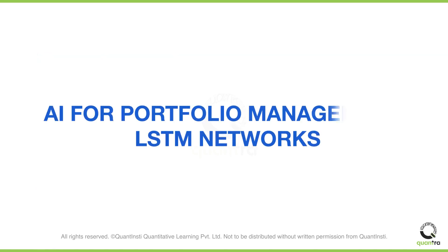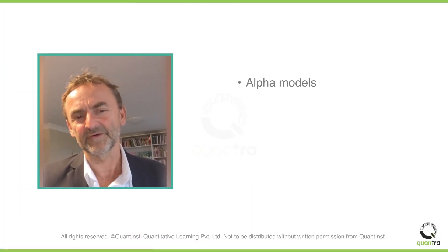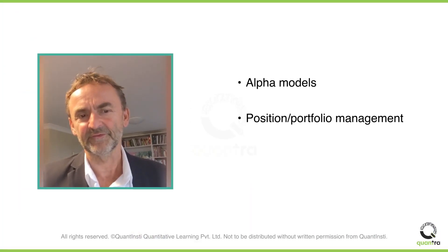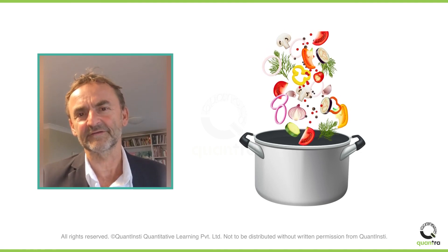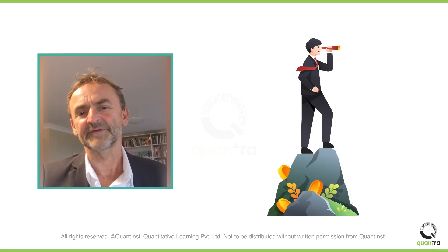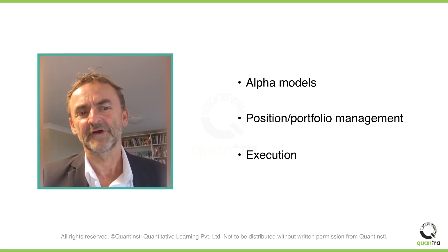I'm excited to share this course on AI for Portfolio Management and LSTM networks with you today. Effective trading consists of working with several ingredients which we need to work in perfect combination to be effective. These ingredients are alpha models, position and portfolio management, and execution. It's like creating a dish where each ingredient plays an important role in the final taste. Market participants tend to focus on any one of them, but I want you to focus on all of them when it comes to creating your own portfolio.